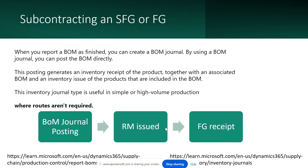As explained in the presentation, this inventory journal type is useful in simple or high volume production — if you have high volume exceeding capacity, a planned maintenance schedule, or need to outsource quickly to an external subcontractor. In those cases, issue the raw materials using a transfer order or transfer journal to a virtual subcontracting warehouse, then move the material from the regular RM warehouse to the subcontracting warehouse, complete the operation with your vendor, receive the material back, and then post your BOM journal. That way you have absolute control of your RM issues.